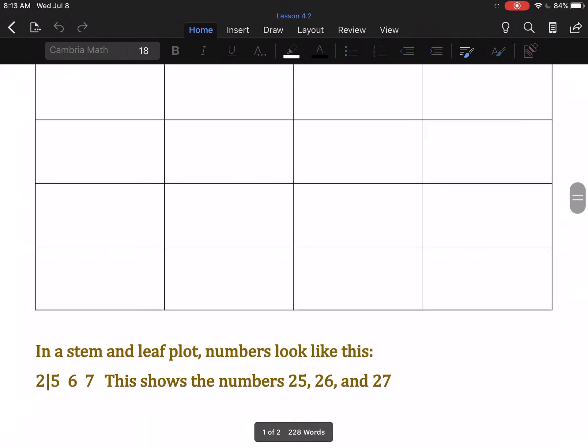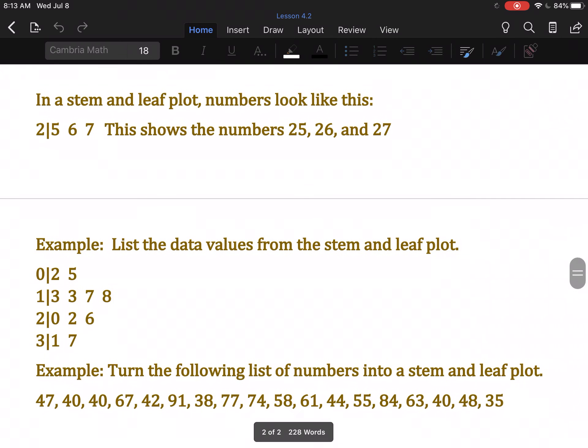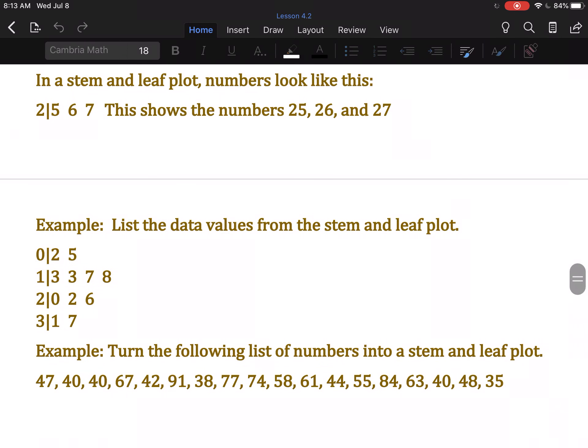We're actually not going to do this first example. We're going to talk about stem and leaf plots in this section. So in a stem and leaf plot, numbers look like this. There's going to be a number on the left side of a bar, and the numbers on the right. The number on the left is called the stem, and each number on the right is a leaf. So collectively they are leaves. This particular bit here shows us the numbers 25, 26, and 27.